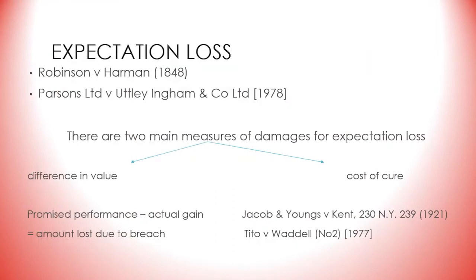Awarding damages for expectation loss means compensating the party for the loss of his expectations — what would the party gain from the performance of the contract if the breach had not occurred? In Robinson v Harman from 1848, the judge said that the rule of the common law is that where a party sustains a loss by reason of a breach of contract, he is, as far as money can do it, to be placed in the same situation with respect to damages as if the contract had been performed.